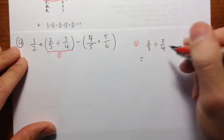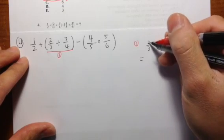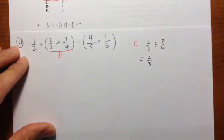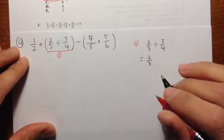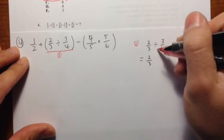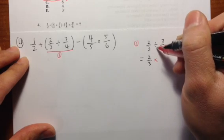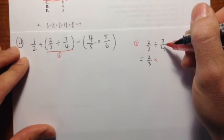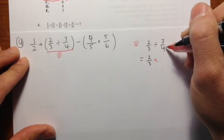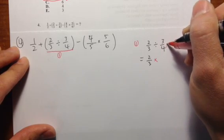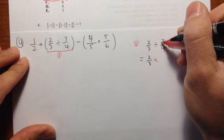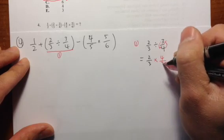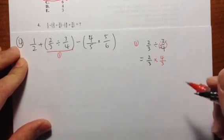To divide fractions, first you keep the first fraction the same — 2 over 3 stays the same. And then we are going to change the division to a multiplication. Then change the second fraction, flip it upside down. So take the 4, bring it up, and take the 3, and bring it down. It's going to look like 4 over 3 — that's what I mean by flipping the fraction.